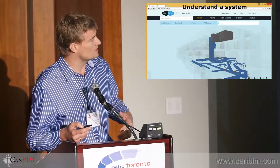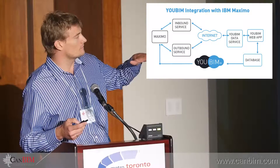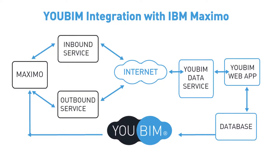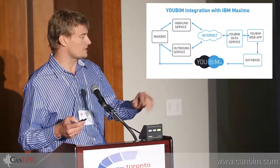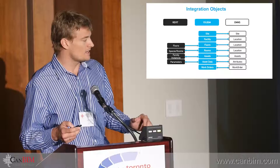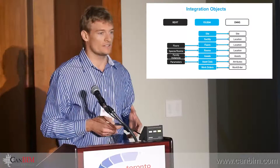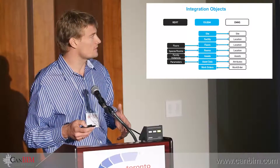We can walk through the typical objects — spaces, rooms, and assets — and how they flow from the BIM model into UBIM and then into the CMMS, when we are handling that data management process.